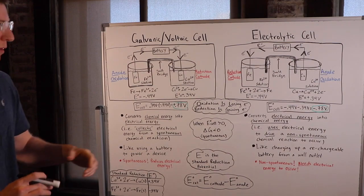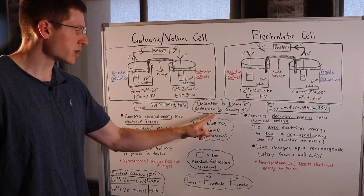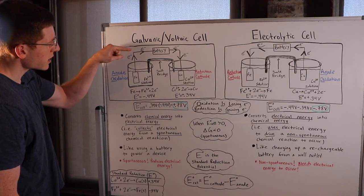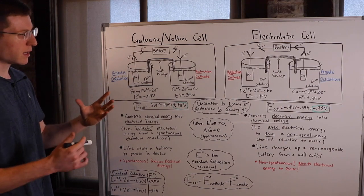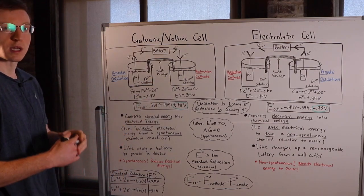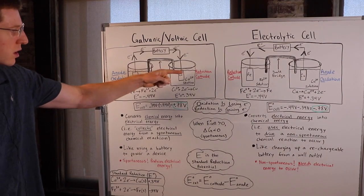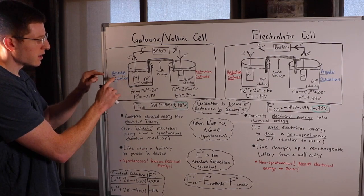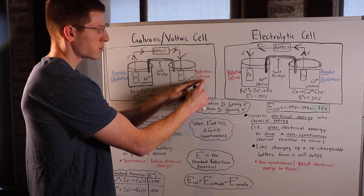You should remember from redox reactions the mnemonic OIL RIG: oxidation is losing electrons and reduction is gaining electrons. Since we're losing electrons from the iron solution, the iron is being oxidized. Since we're gaining electrons in the copper solution, copper is being reduced. Another mnemonic is An Ox Red Cat, which reminds you that where oxidation occurs is always the anode, and where reduction occurs is always the cathode.